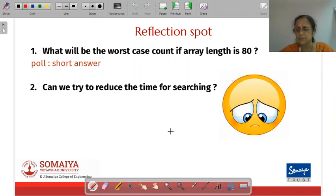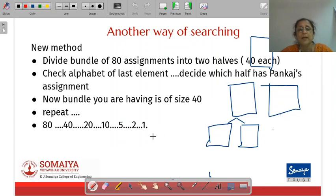Let's go back to my own problem of bundle of 80 assignments and searching one person's assignment in it. Let's say this is my bundle to start with and I converted it into two halves of 40 each. Now when I divided this bundle into two halves of 40 each, I looked at the alphabet of the last element in this bundle and it was more than P. So I decided for sure that the Pankaj assignment will be in this group of 40 assignments and I discarded this bundle because that was starting from Q.